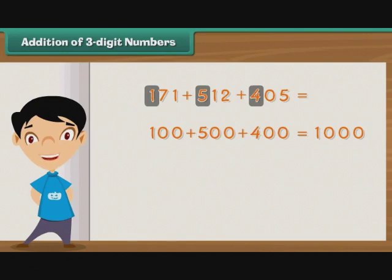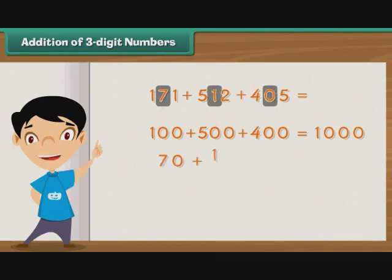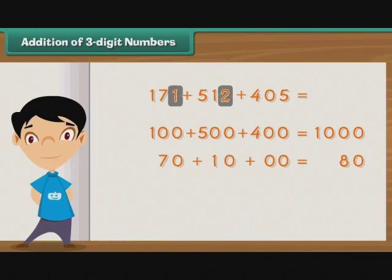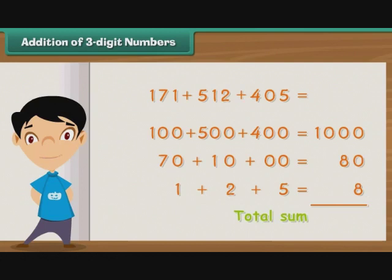Now we proceed to add the digits at the tens place, that is, 7, 1 and 0. We add 70, 10 and 00 to get 80. Finally, we add the digits at the ones place, that is, 1, 2 and 5, to get 8. Now we need to add 1000, 80 and 8 to get the sum of 171, 512 and 405. The result of the addition is 1088.